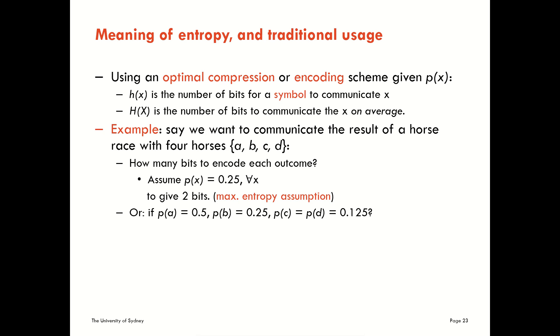But there could be other distributions that the winners have. We could have a skewed distribution where horse A has a 50% chance of winning, horse B has a 25% chance, and horse C and D only have a 1 in 8 chance each. So how should we encode those values? Should we still use the same encodings, 0, 0, 0, 1, 1, 0, and 1, 1? Will that still be efficient under this probability distribution function? I hope you can see that the answer is no.